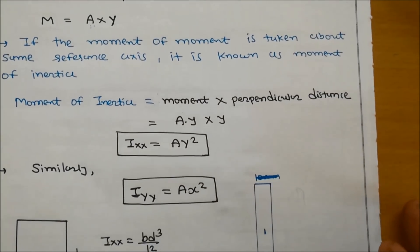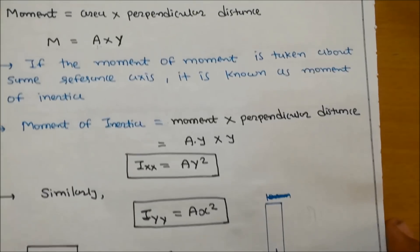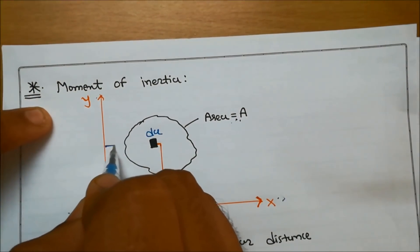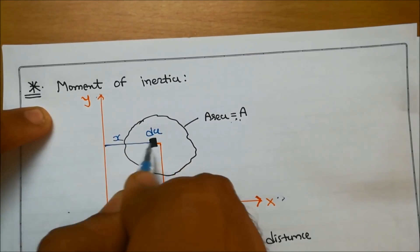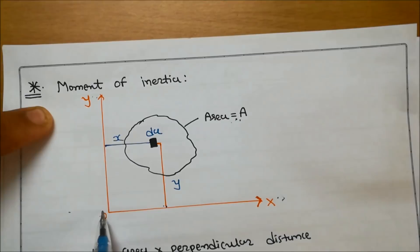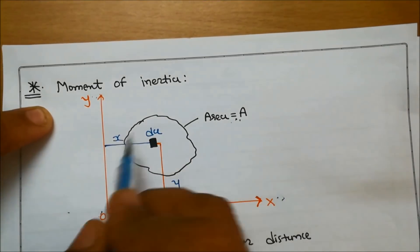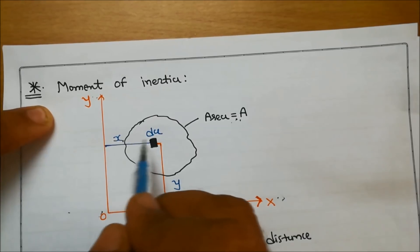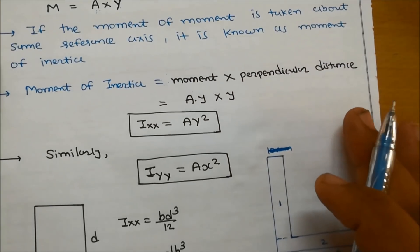Similarly, Iyy is the moment of inertia about the yy-axis. If we take the perpendicular distance as x — the horizontal distance — then the first moment is A times x, and the second moment is A times x times x. So Iyy is equal to Ax square.